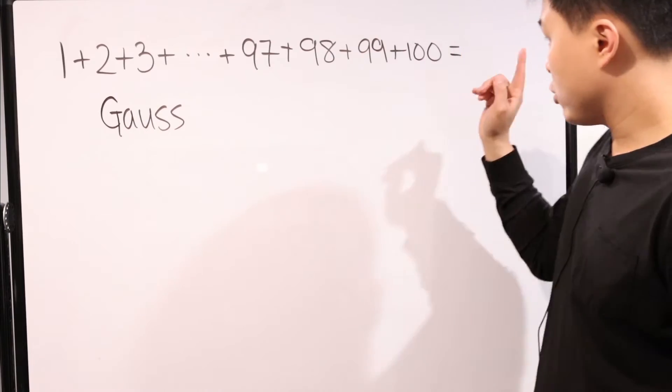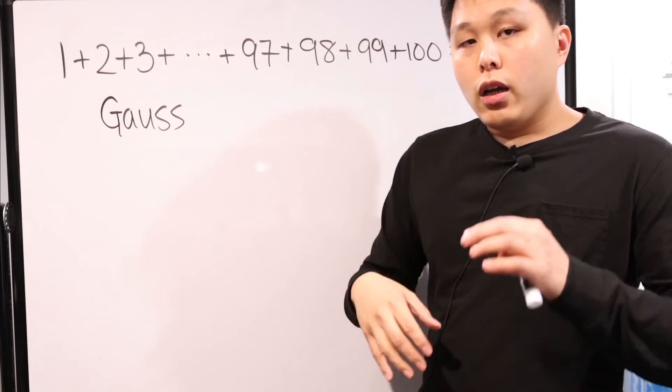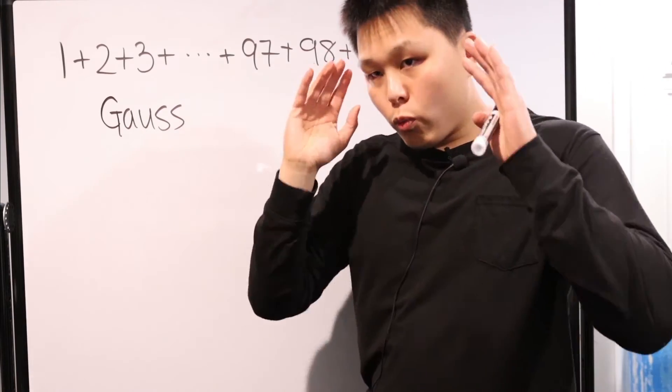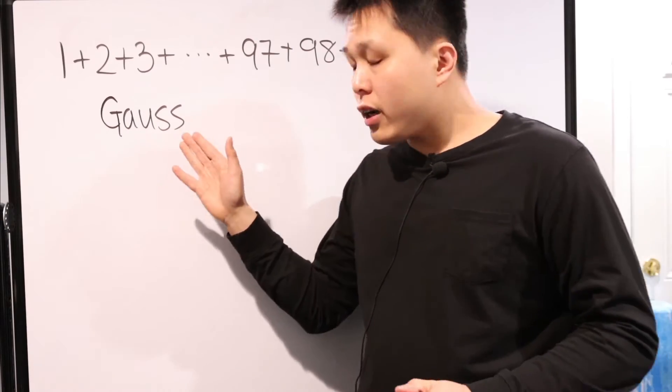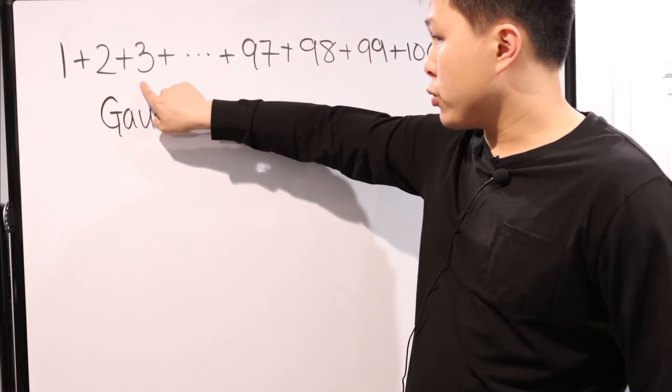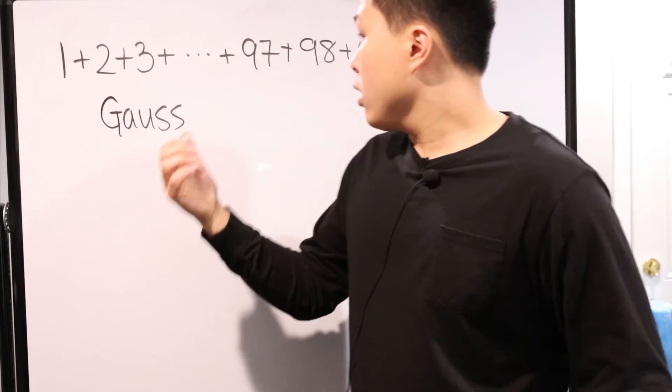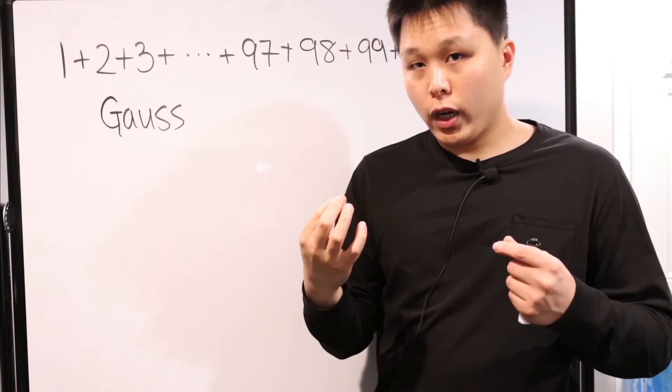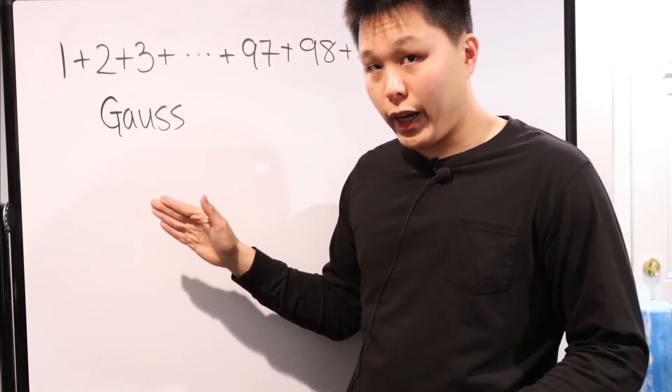Now the story goes that once presented with the problem, a majority of his classmates just jumped right in and started adding 1+2+3, and then by hand, so on and so forth all the way into 100. Gauss, on the other hand, found this magnificent way of reorganizing numbers.